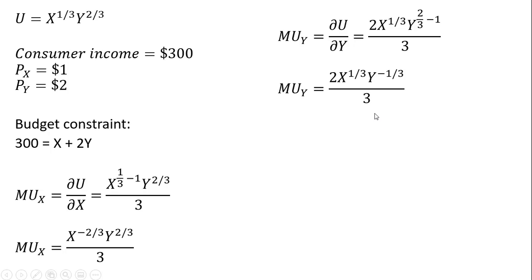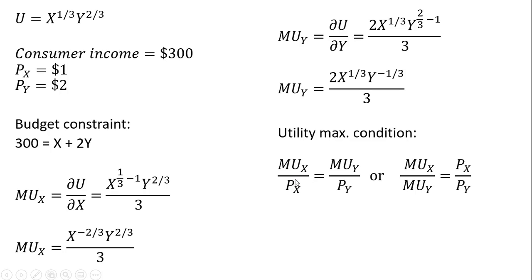The next step is to write our utility-maximizing condition. We can write it one of two ways: the marginal utility of good X divided by the price of good X equals the marginal utility of good Y divided by the price of good Y. Or equivalently, the marginal rate of substitution equals the ratio of the prices.